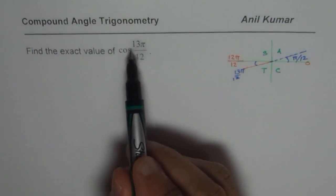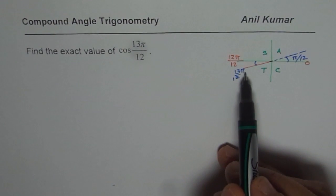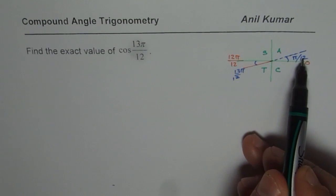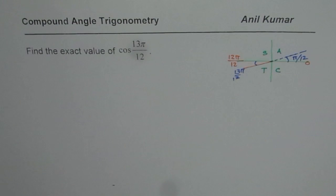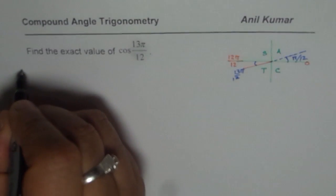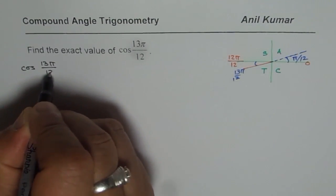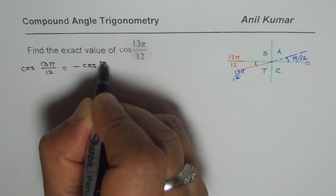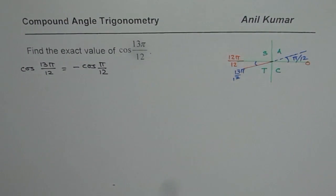So, cos of 13π/12 is going to be negative. If I am writing it in terms of the related acute angle π/12 in quadrant 1, all are positive. And therefore, I have to write this cos of 13π/12 as equals to negative cos of π/12. This is very important to understand.